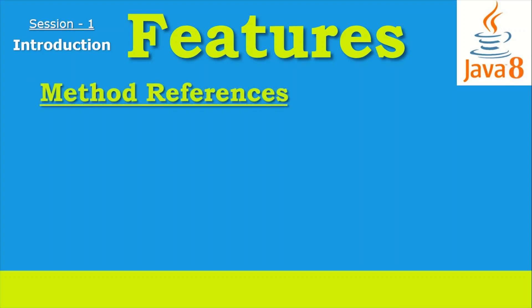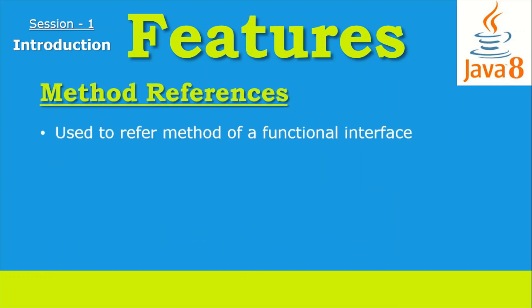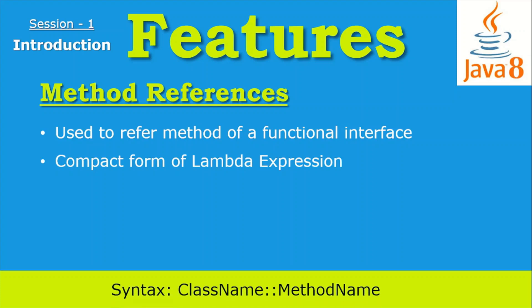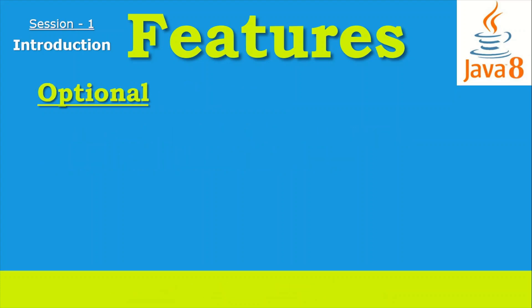The next feature is method reference. Java 8 method reference is used to refer to a method of a functional interface. It is a compact and easy form of lambda expression and can be used as an alternative to it. Every time we use a lambda expression just to refer to a method, we can replace it with a method reference. The syntax specifies the class name, then double colon, then the method name.